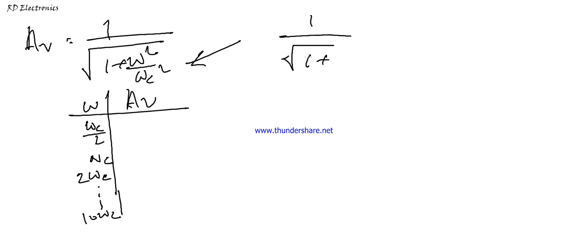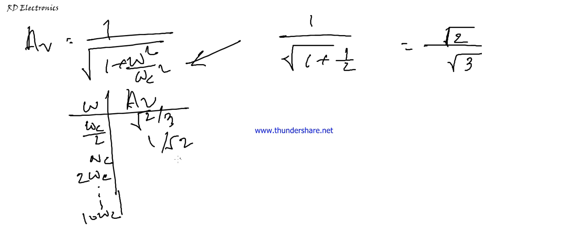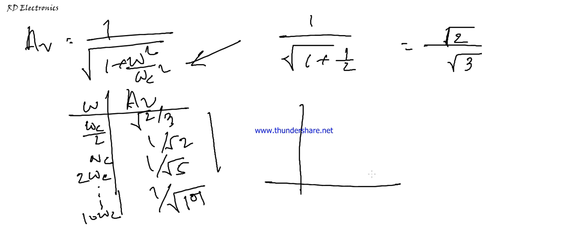When ω = ωC/2, the gain is √(2/3). When ω = ωC, the gain is 1/√2. When ω = 2ωC, the gain is 1/√5. When ω = 10ωC, the gain is 1/√101. As we increase the frequency, the value of the gain decreases: 1/√2 > 1/√5 > 1/√101, confirming that gain decreases with increasing frequency.